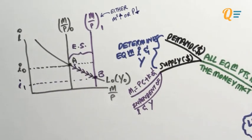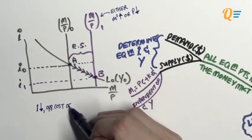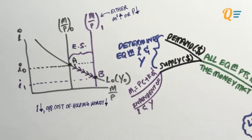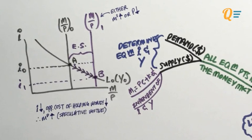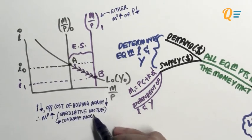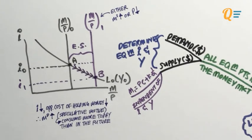The market will have a new equilibrium with the interest rate level at I1. So the intuition: when interest rates fall, the opportunity cost of holding money falls. So when this opportunity cost falls, the demand for money increases. This is the speculative motive of holding money in action — people will want to consume more today than in the future because of lower interest rates. In layman's terms, if I have to put my money into a place which earns me very little interest, I would prefer to take that money out and spend it today instead.